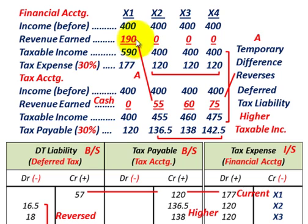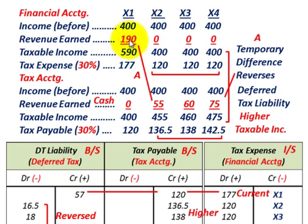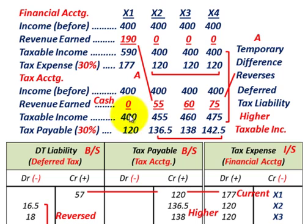This is another temporary difference that reverses itself: financial accounting had $190,000 in year one and none in the next three years, while tax accounting had zero in year one and the $190,000 reversed over the next three years. Looking at taxes: in year one for financial accounting, taxable income is $190,000 plus $400,000 equals $590,000; at 30%, tax expense is $177,000. For tax accounting, no revenue was recognized in year one, so taxable income is only $400,000. Each of the next three years, revenue earned increases taxable income for tax accounting.